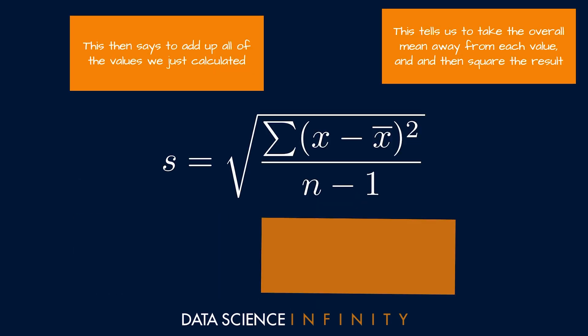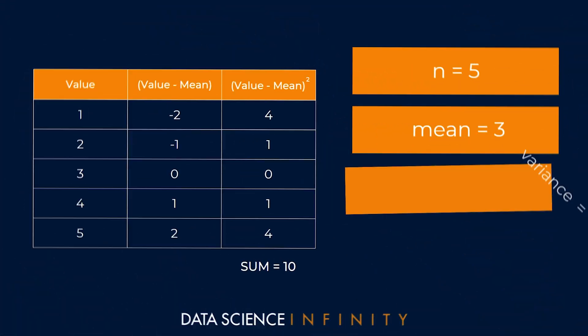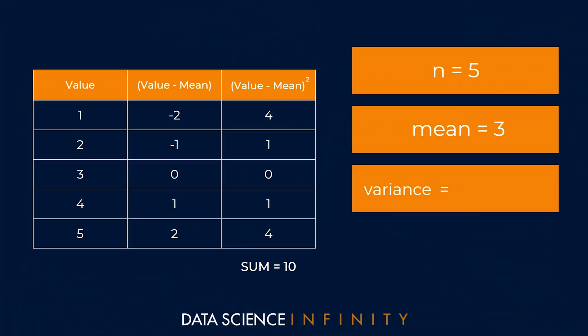From here, the next step in our formula was to take this total deviation and move it to a mean or average deviation for the sample, or what is often just referred to as the variance. As this is a sample of data to do this, as per our formula, we want to divide our total squared deviation value of 10 by n, our sample size of 5, minus 1, so 4.